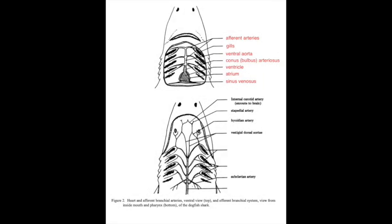We're going to start out with the dogfish shark. In these animals the circulatory and respiratory systems are very closely intertwined, as you can see in these diagrams showing the gills and the different parts of the circulatory system. The heart pumps unoxygenated blood to the gills for oxygenation, and then the oxygenated blood is distributed to the body.